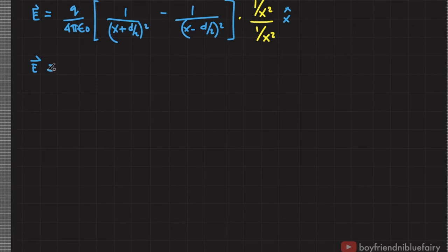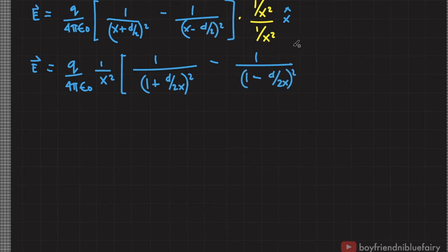Then we end up with electric field equals q over 4 pi epsilon naught times 1 over x squared quantity 1 over quantity 1 plus d over 2x squared minus 1 over quantity 1 minus d over 2x squared.